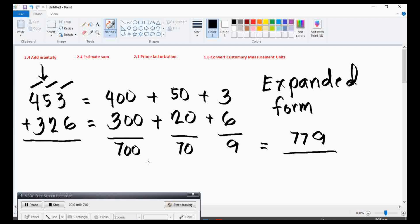After putting the expanded form, let us add each part from ones, tens, and hundreds. 3 plus 6 will be 9. 50 plus 20 will be 70. 400 plus 300 will be 700. After finding the sum of each value, we will add all the numbers. 700 plus 70 will be 770, plus 9 will be 779. And that's the other way of adding numbers using expanded form.